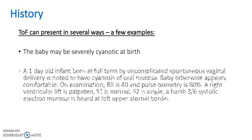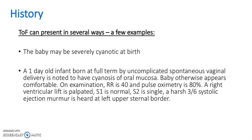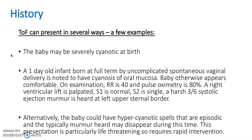Let's look at a history. A one-day-old infant born at full term by uncomplicated spontaneous vaginal delivery is noted to have cyanosis of the oral mucosa. Baby otherwise appears comfortable. On examination, respiratory rate is 40 and pulse oximetry is 80%. A right ventricular lift is palpated. Sound 1 is normal, Sound 2 is single. A harsh grade 3 systolic ejection murmur is heard at the left upper sternal border. Another presentation is that the baby may be severely cyanotic at birth. Alternatively, the baby could have a hypercyanotic spell — these are episodic, and a typically heard murmur may disappear during this time. This presentation is particularly life-threatening, so it requires rapid intervention.